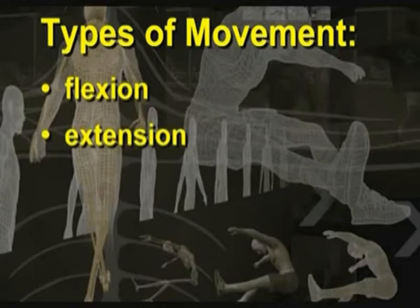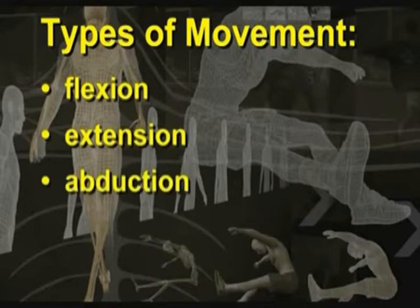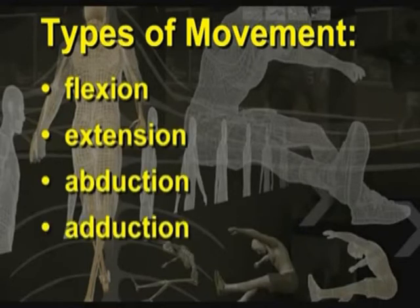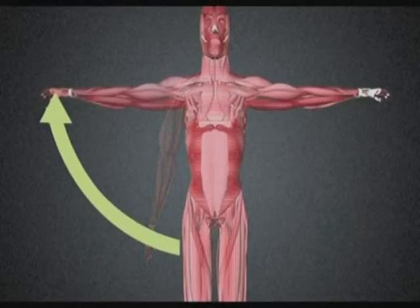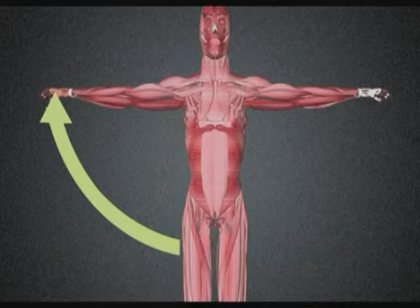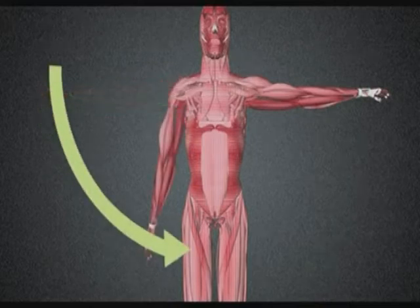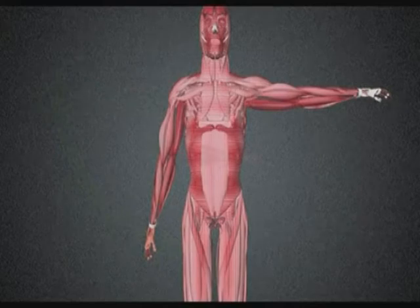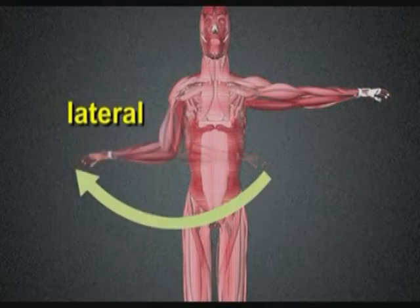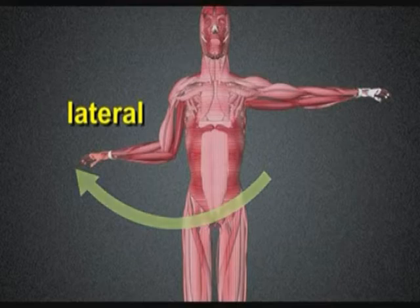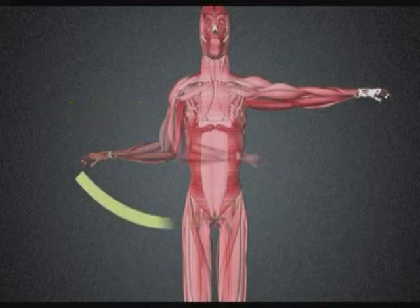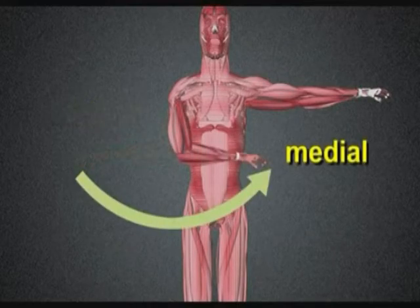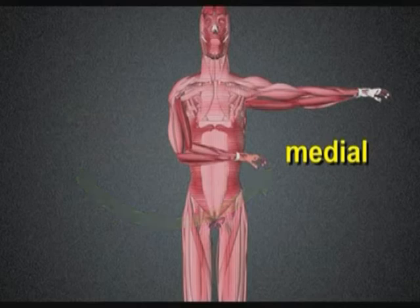Of particular relevance to athletes are abduction, adduction, and rotation. Abduction is the movement of a body part away from the midline of the body. Adduction is the movement of a body part towards the midline of the body. Rotation is when a body part is moved either outwards — lateral rotation — or inwards — medial rotation — around its long axis.